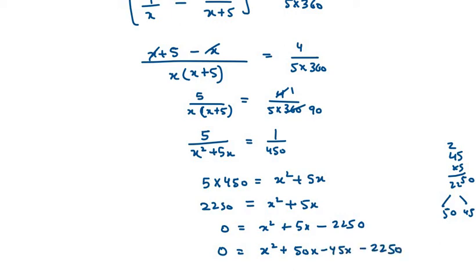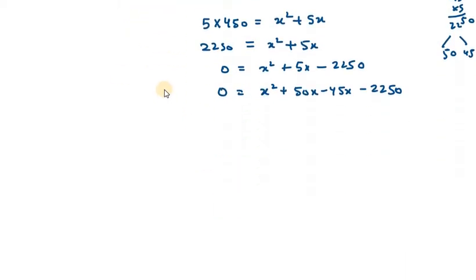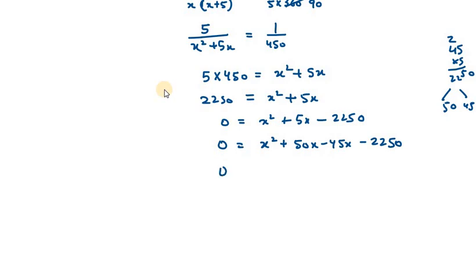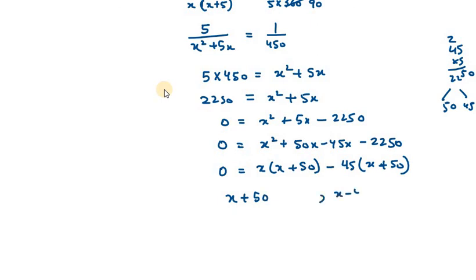Factoring: take x common from the first two terms to get x(x plus 50), and take 45 common from the last two terms to get 45(x plus 50). This gives (x plus 50)(x minus 45) equals 0, so x equals minus 50 or x equals 45. Since speed cannot be negative, we reject minus 50. Therefore, the original speed of the train is 45 kilometers per hour.